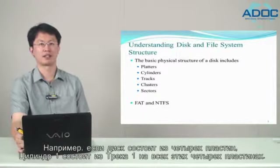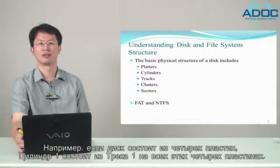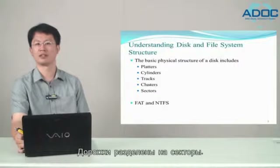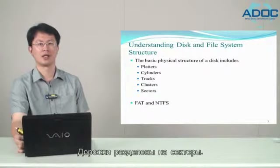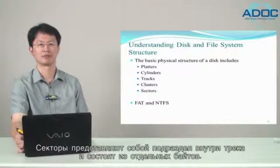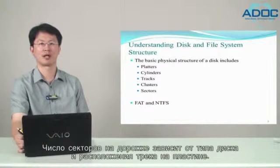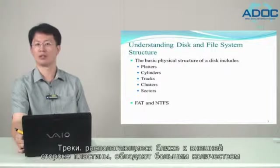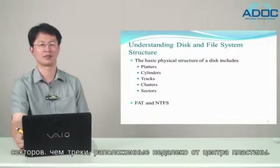Tracks that reside in the same locations on each platter form a cylinder. For example, if a disk has four platters, cylinder one consists of track one from all four platters. Tracks are divided into sectors, which represent a subsection within the track and are made up of individual bytes. The number of sectors in a track depends on the disk type and the location of the track on the platters. Tracks closer to the outside of the platters can have more sectors than tracks near the center.